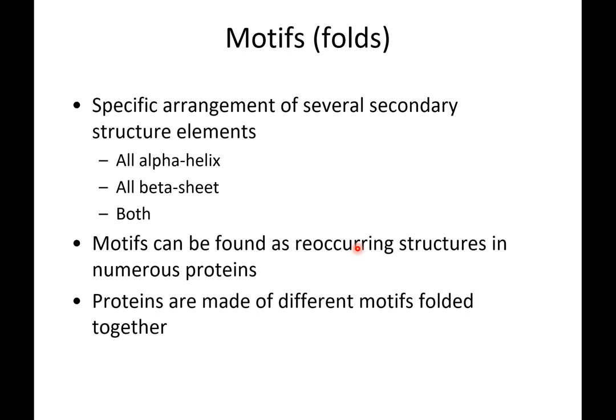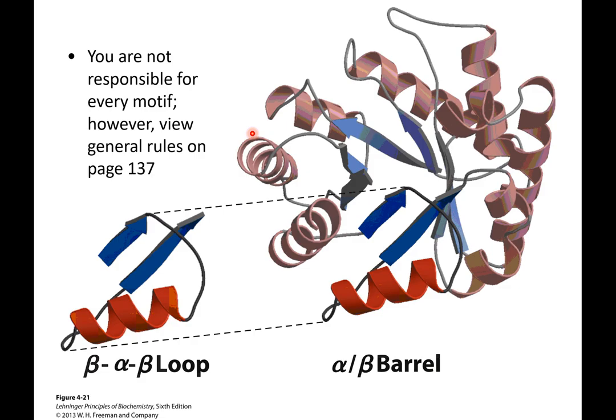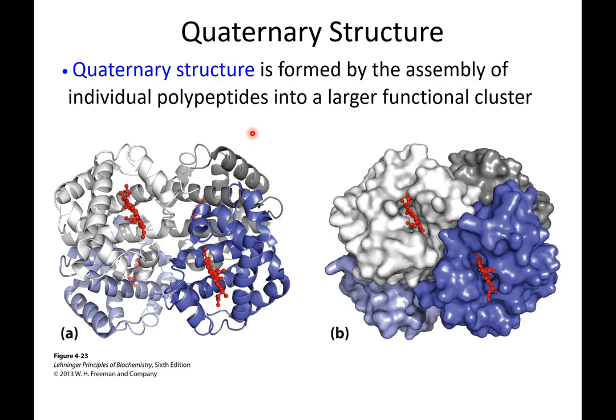The next section looks at a few of the common motifs or folds. A motif is simply a special arrangement of secondary structure. Very commonly, we will see a beta-alpha-beta loop where we have a beta sheet, an alpha helix, then the next section of beta sheet. The alpha-beta barrel is also very common. Our last hierarchy to consider is the quaternary structure, which we'll look at in more detail in the next chapter using hemoglobin.